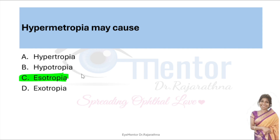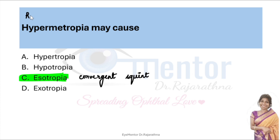Hypermetropia causes convergence squint, which is very important. It has been an often-asked question, so this is a repeat question. You should never make a mistake in your repeat questions.